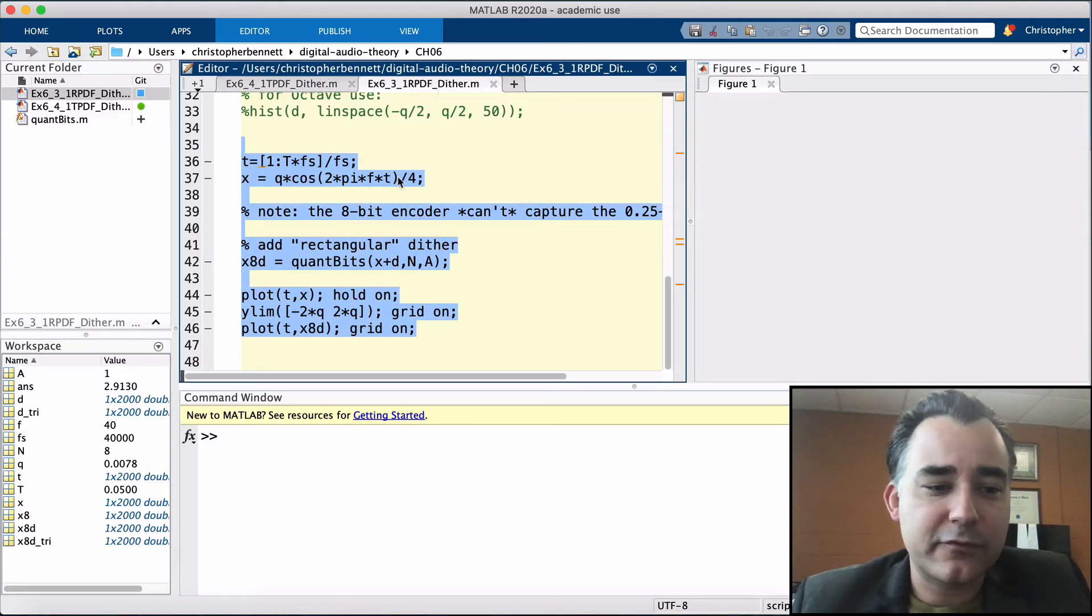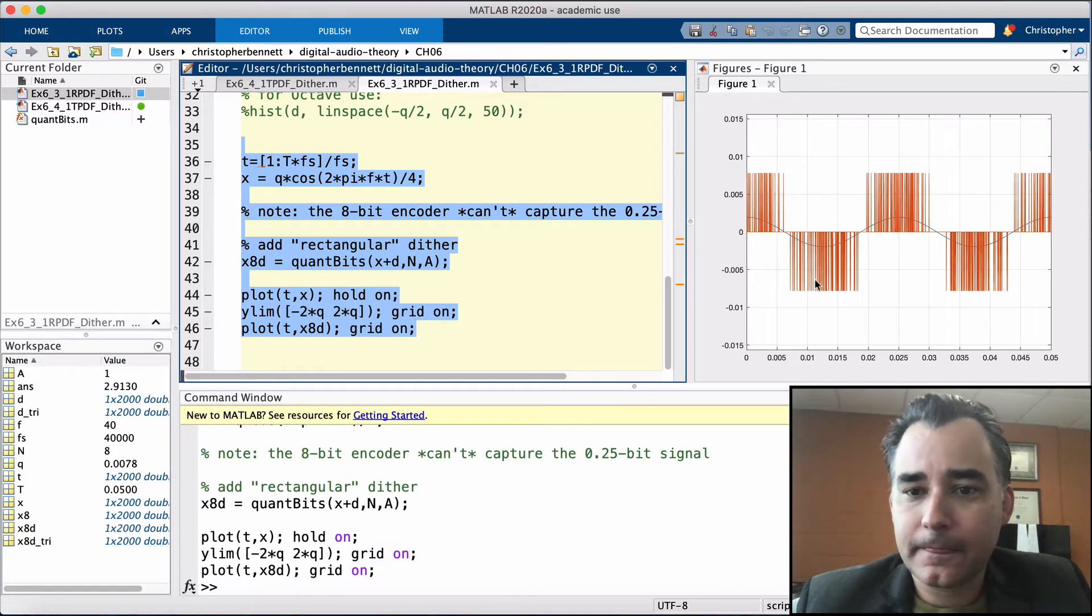So here's 6.3.1, and if we load it up and run this code, here's our low-level signal. We set it as a cosine that is one-quarter of a Q level, but if we add some dither to it and quantize, lo and behold, the noise modulation appears again. You can see it tracking with the phase of this low-level signal.